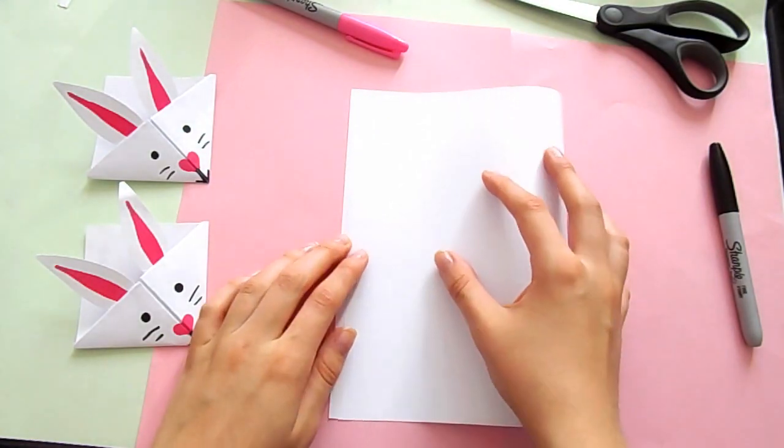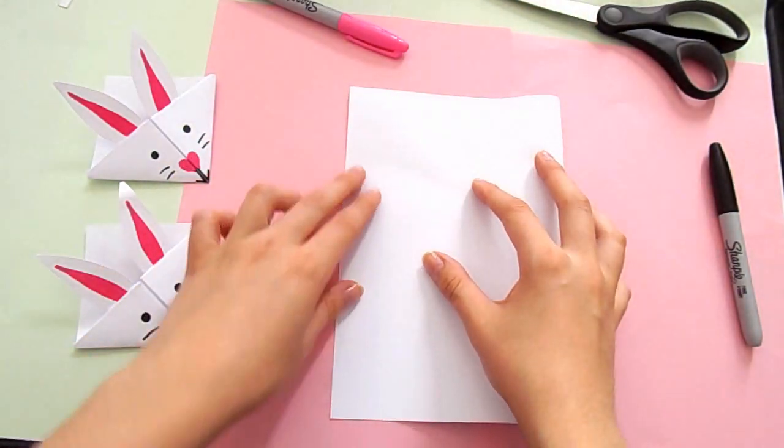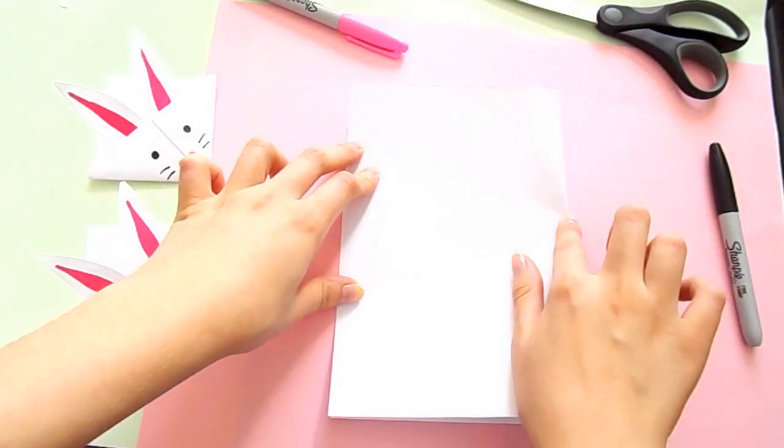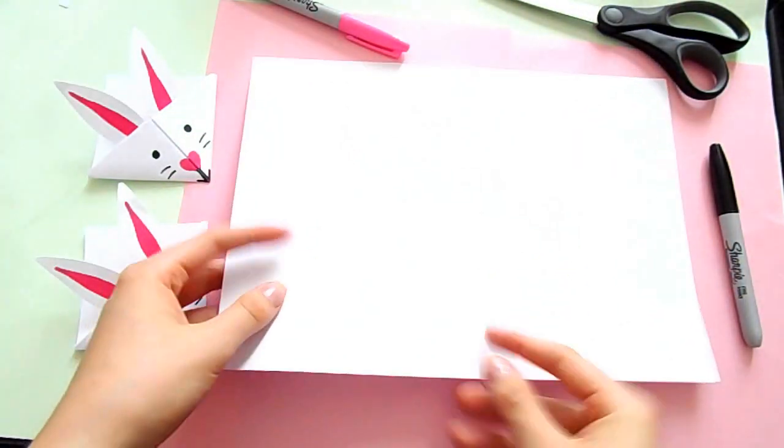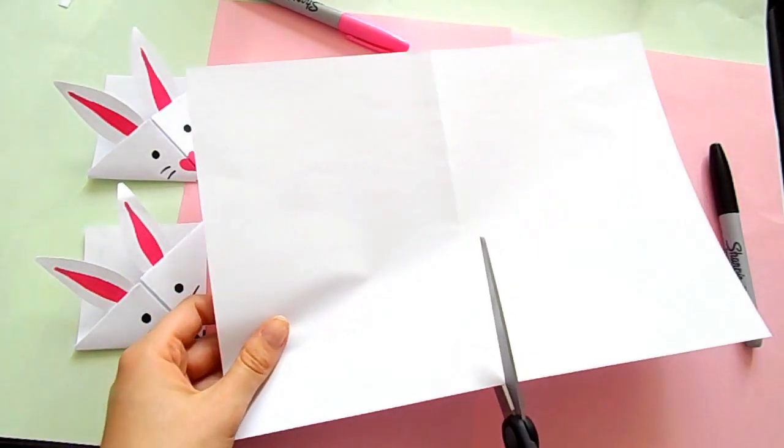The first thing you'll need to do is take a normal white sheet of paper and fold this in half, then cut it in half right down the middle so we have two pieces. Each of these pieces will make one bunny.